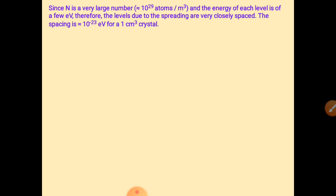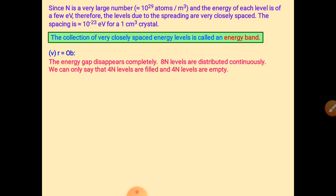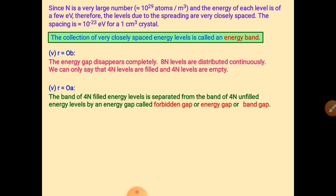One cubic meter of volume contains approximately 10²⁹ atoms. The collection of very closely spaced energy levels is called an energy band. Here we have 8n levels distributed continuously, but only 4n levels are filled; the other 4n levels remain empty.